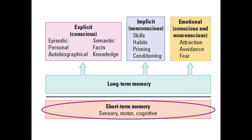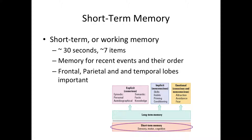So let's start off with short-term memory. I often actually call it working memory. It is a neural record of recent events in their order. We mainly use short-term memory systems to hold sensory events or movements and also cognitive information such as words, names, and items for a very small period of time.